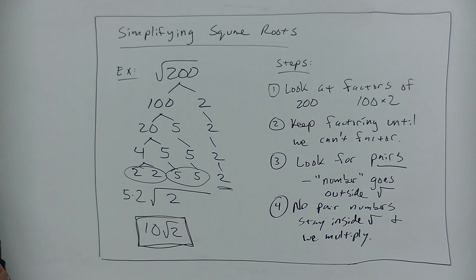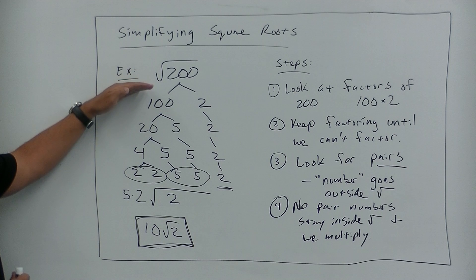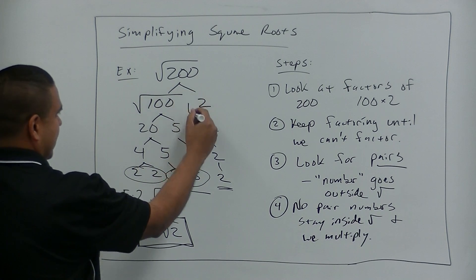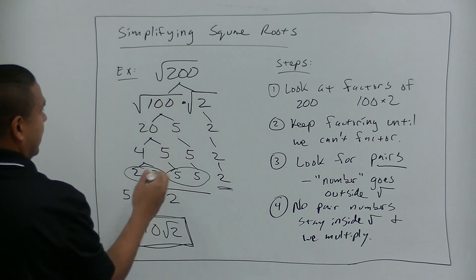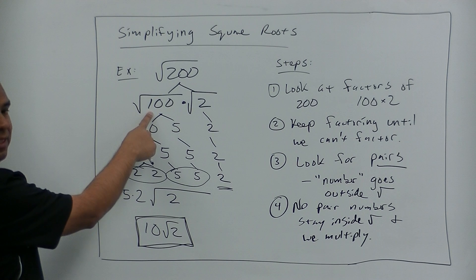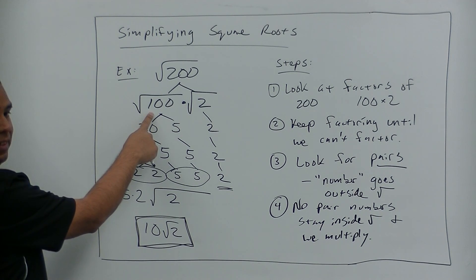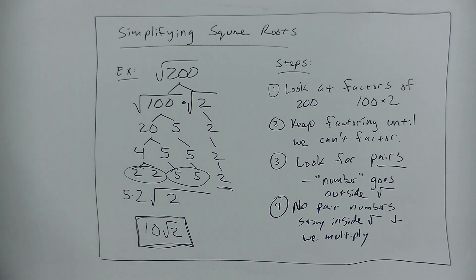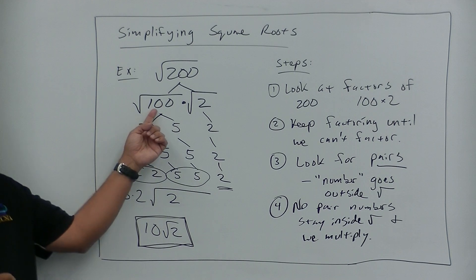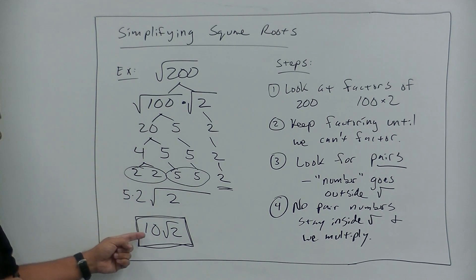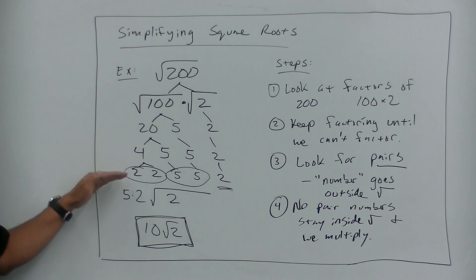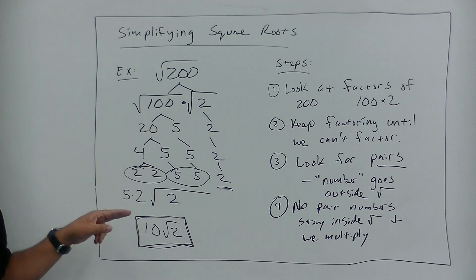Now I know some of you are really good at math and you say, that's a lot of work. And you're right — we could have taken a shortcut right here and said the square root of 100 — I know what that is — it's 10. And we have a square root of 2. So if you can see a perfect square, you could use that shortcut. If not, don't worry about it. Follow the steps, break it all the way down, find your pairs, and you'll always get the right answer.